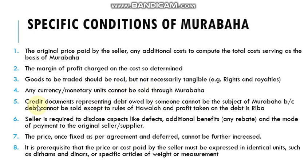Number five: credit documents representing a debt owed by someone cannot be the subject of Murabaha, because they cannot be sold except under the rules of Hawala. Furthermore, any profit taken on debt is again a kind of Riba, which is strictly prohibited. So credit documents cannot be sold.